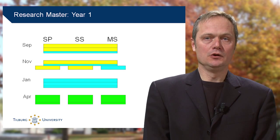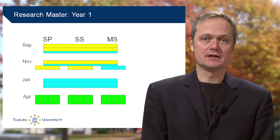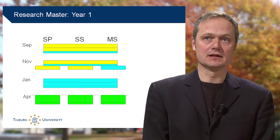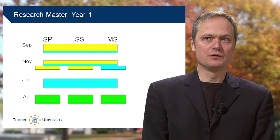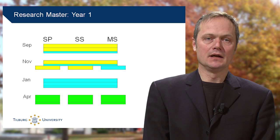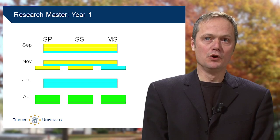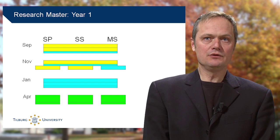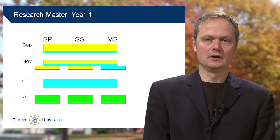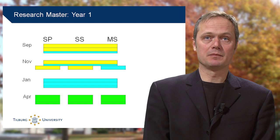On the slide, you also see the acronyms for Social Psychology (SP), Social Sciences (SS), and Methodology and Statistics (MS). In the blocks, you see two or three colored rectangles. These represent the courses in the first year. Yellow rectangles are the courses in Social and Behavioral Sciences. Blue rectangles are courses in Research Methodology and Statistics. Green rectangles are individual research parts, where doing research comes in via traineeships and writing academic papers.